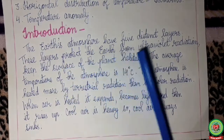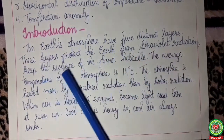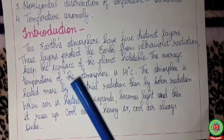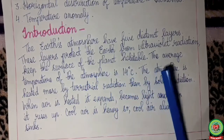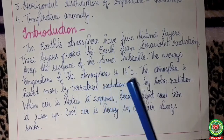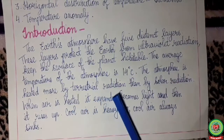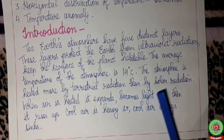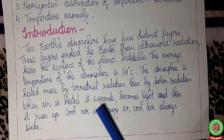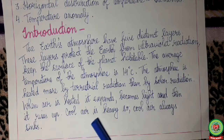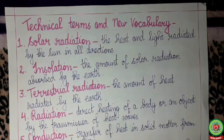We have studied that the earth's atmosphere has five distinct layers. These layers protect the earth from ultraviolet radiation and keep the surface of the planet habitable. The average temperature of the atmosphere is 14 degrees Celsius. The atmosphere is heated more by terrestrial radiation — that is, heat of the earth — than by solar radiation. When air is heated it expands, becomes light, and rises up. Cool air is heavy, so cool air always sinks.